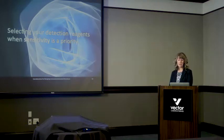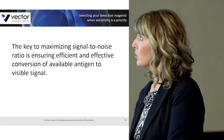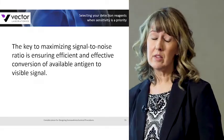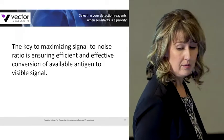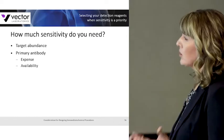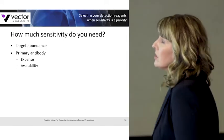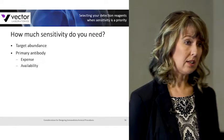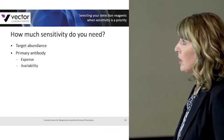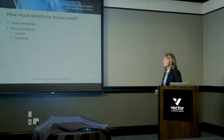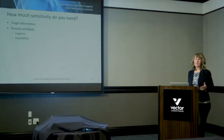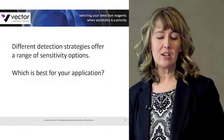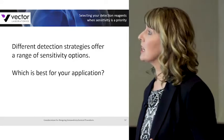When sensitivity is a priority in your laboratory, you'll want to maximize your signal-to-noise ratio by ensuring that all available antigen is effectively converted into visible signal. How much sensitivity you need depends on the target abundance in your tissue section — whether your target is available in low or high quantities. Another consideration is your primary antibody; if it's expensive or in low quantity, selecting higher-sensitivity reagents may allow you to dilute it out, saving money.